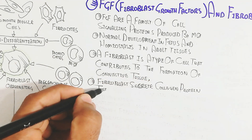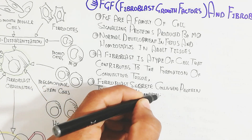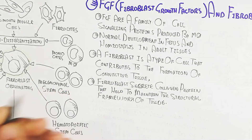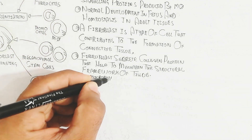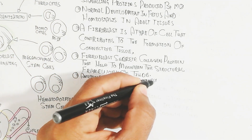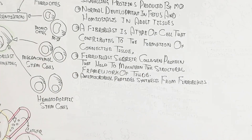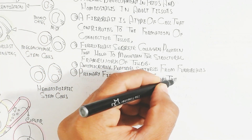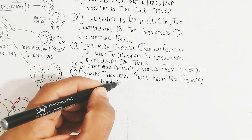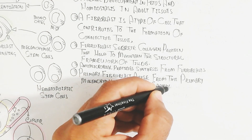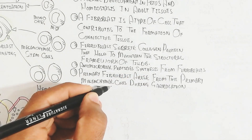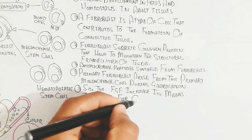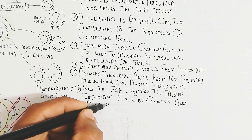Fibroblasts secrete collagen protein, which helps maintain the structural framework of tissue. Antimicrobial peptide synthesis from fibroblasts is also possible. Primary fibroblasts arise from primary mesenchymal cells during gastrulation, when ectoderm, mesoderm, and endoderm form — so FGF is important for cell growth and development.